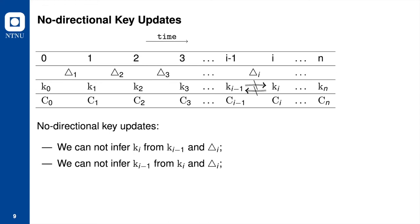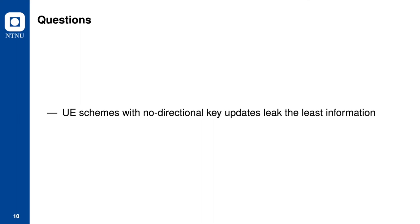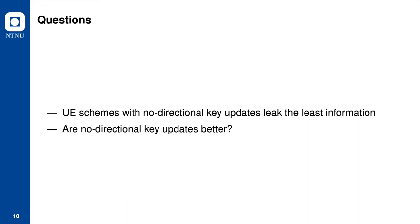In the no-directional key update setting, the update token cannot be used to derive keys. UE schemes with no-directional key updates are the best, since they leak no additional key information. We will show that the no-directional key update variant of a security notion is strictly stronger than the uni and bidirectional update variants of the same security notion.